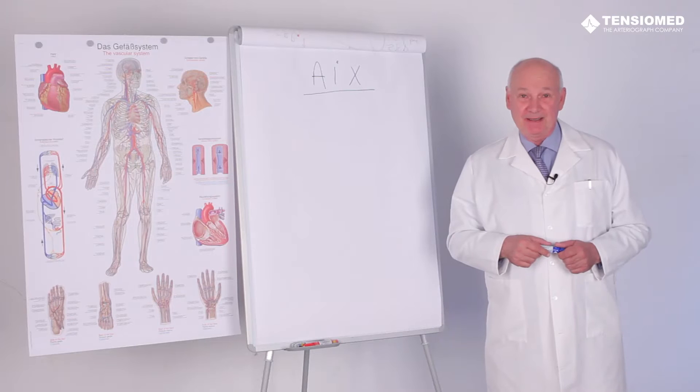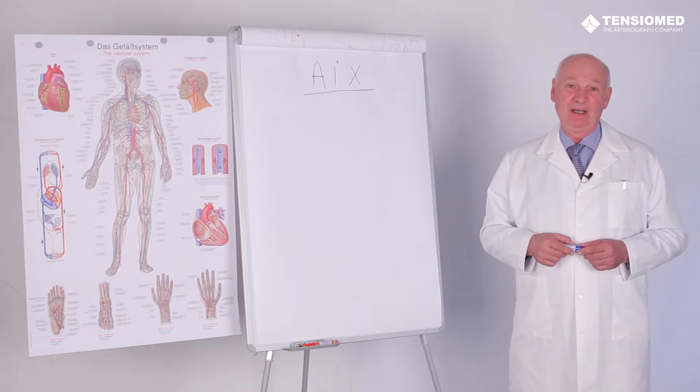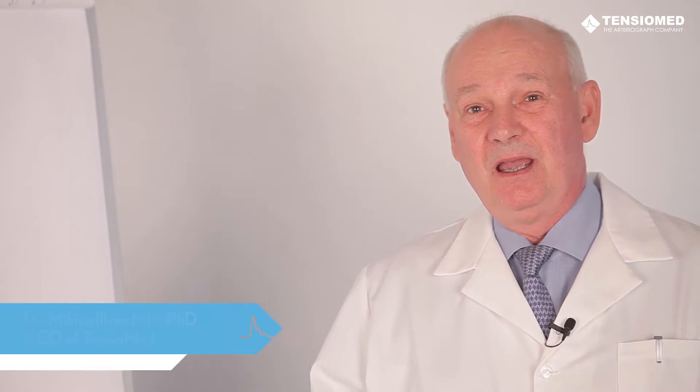The augmentation index is a second very important parameter which is used to measure arterial function and arterial stiffness. It has to be mentioned, however, that the augmentation index is an entirely different parameter as compared to the aortic pulse velocity.